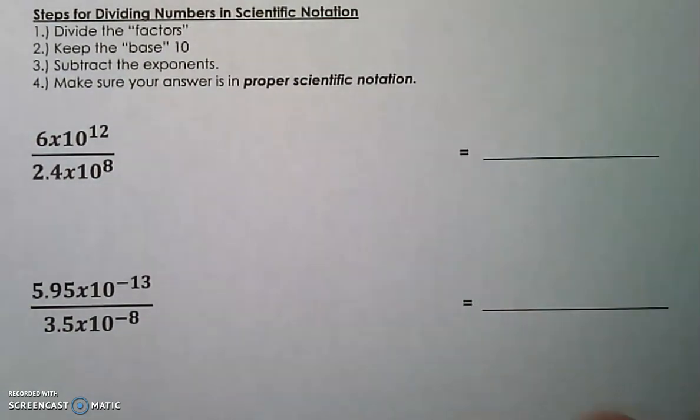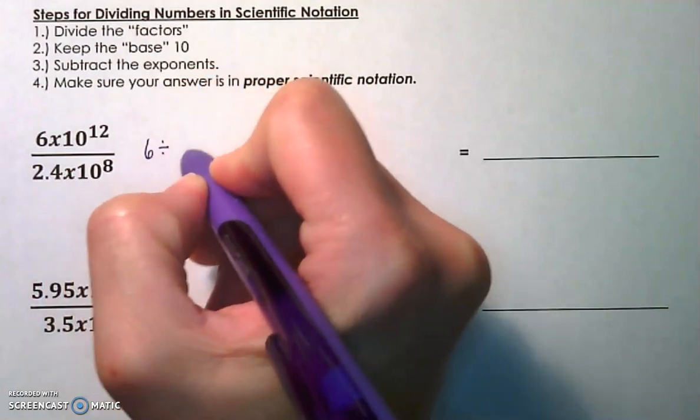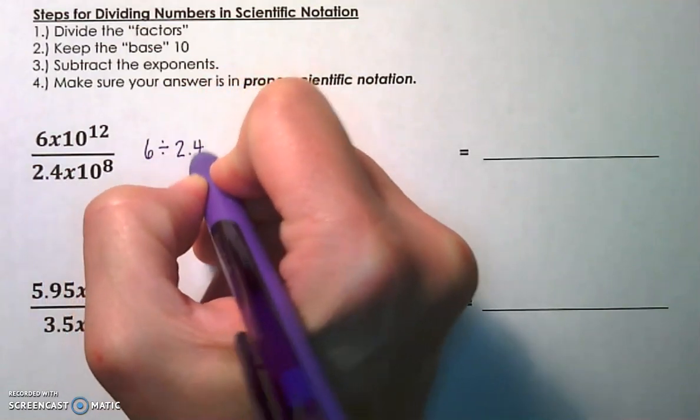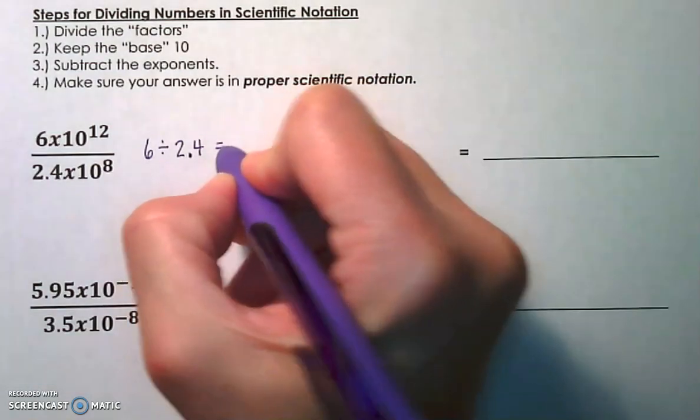So let's take a look at number one, the first example. We're going to do 6 divided by 2.4, so when you put that in your calculator, it's 6, then the division sign, and then 2.4. So the numerator always goes in the calculator first. So 6 divided by 2.4 is going to give us 2.5.